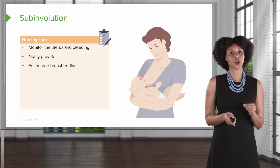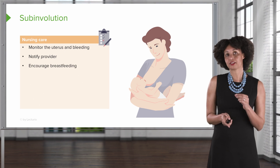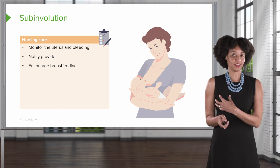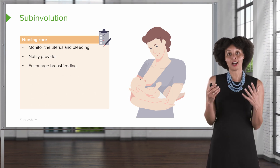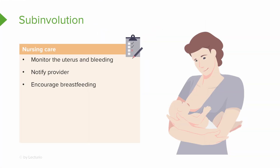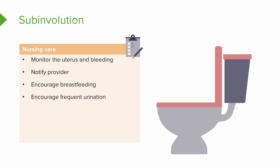We want to encourage breastfeeding, because every time the baby suckles the breast, oxytocin is released. Oxytocin is something we can give to stimulate contractions, but the body already produces it naturally — so if the baby suckles, we get more oxytocin, which causes uterine stimulation. We also want to encourage frequent urination, as a very full, distended bladder will make uterine contractions very difficult.